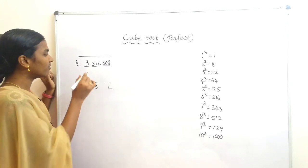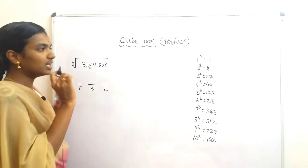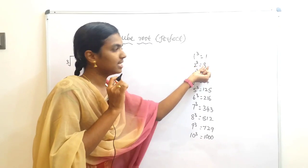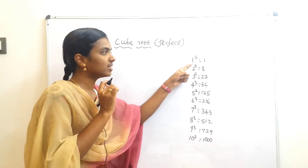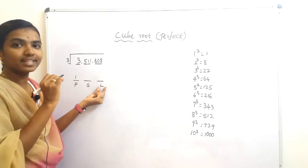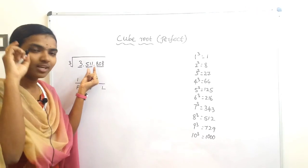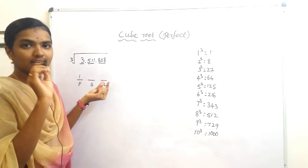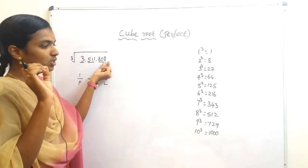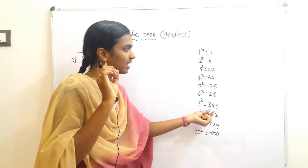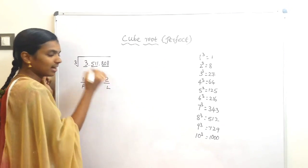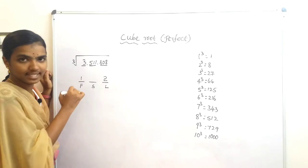For finding the first digit: 3 lies between 1 and 8 (i.e., 1³ and 2³), so we take the lower cube root, which is 1. For the last digit: the last digit of the number is 8. The cube whose last digit is 8 is 2³ = 8, so the last digit of our answer is 2.